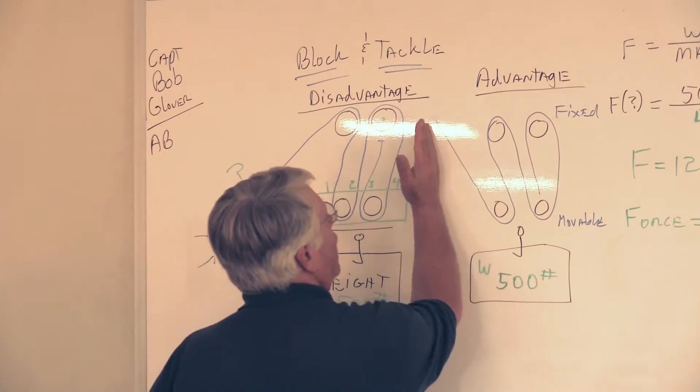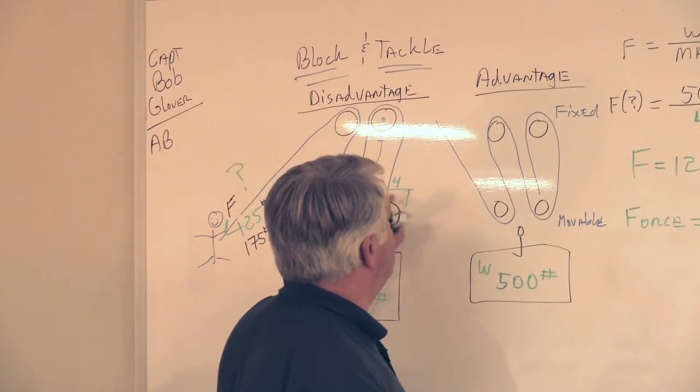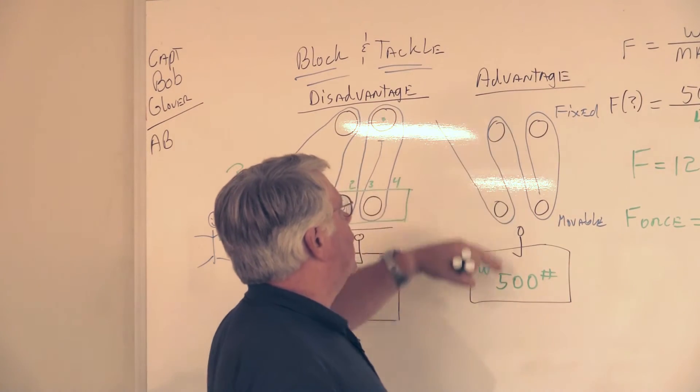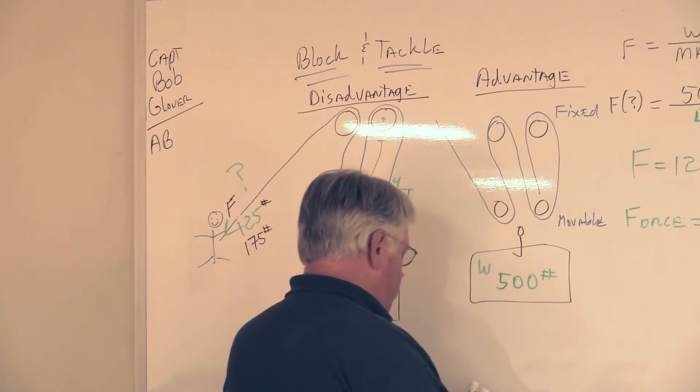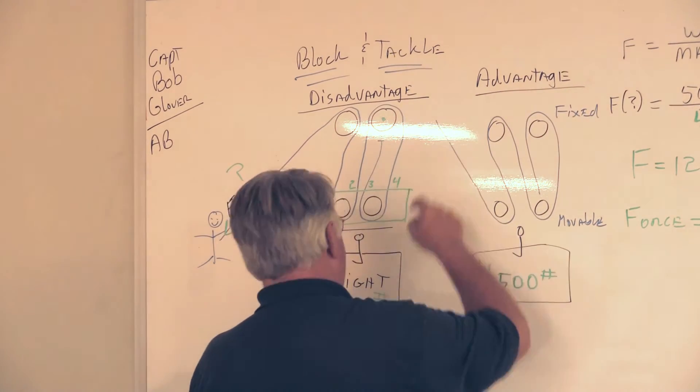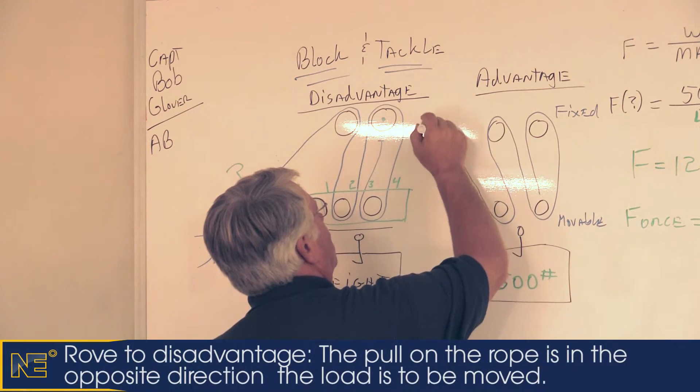Right next to it I've drawn the same system, the same two double shiv blocks, roved to advantage. And why is it to advantage? Well notice now that the hauling part goes to the movable block first.